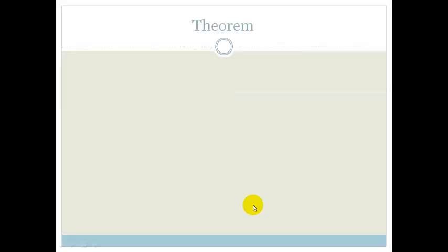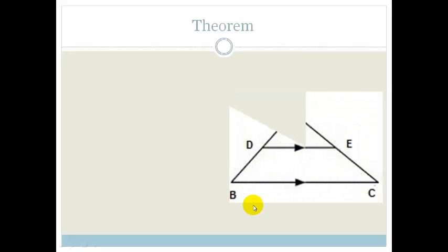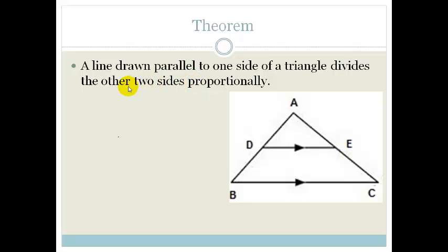Let's look at our first theorem. We have this triangle where you can see a line going across the triangle that is parallel to one side. The theorem states: a line drawn parallel to one side of the triangle divides the other two sides proportionally. We are given that DE is parallel to BC.